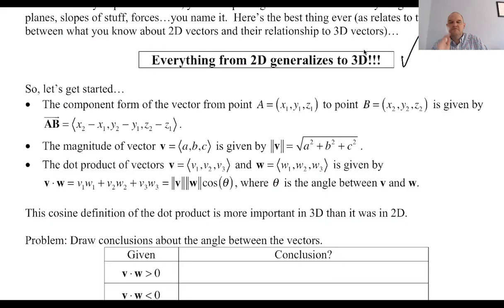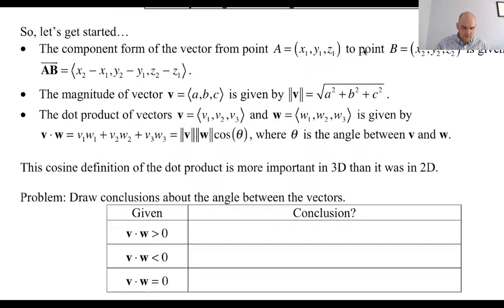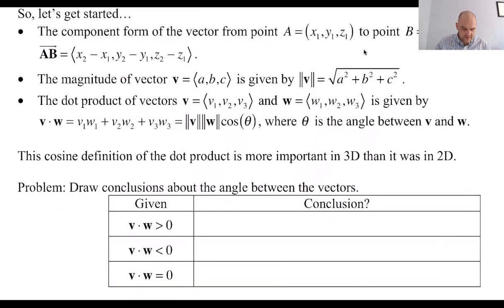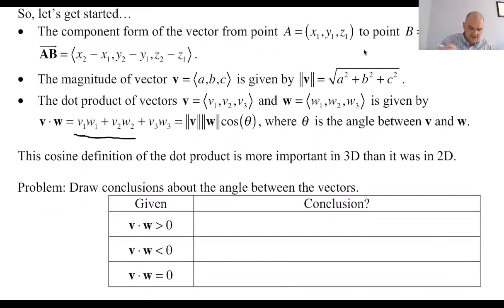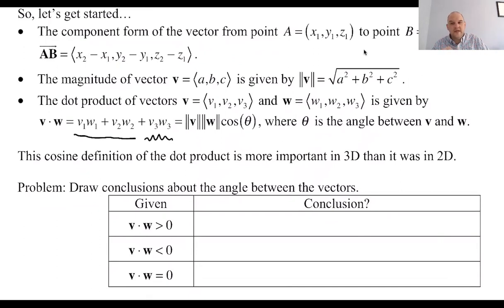The dot product is the same exact thing except now it has a third component. In two dimensions we would stop before that third component. In three dimensions we add it. And we can still use magnitude times magnitude times cosine — so mag, mag, cosine equals the dot product.